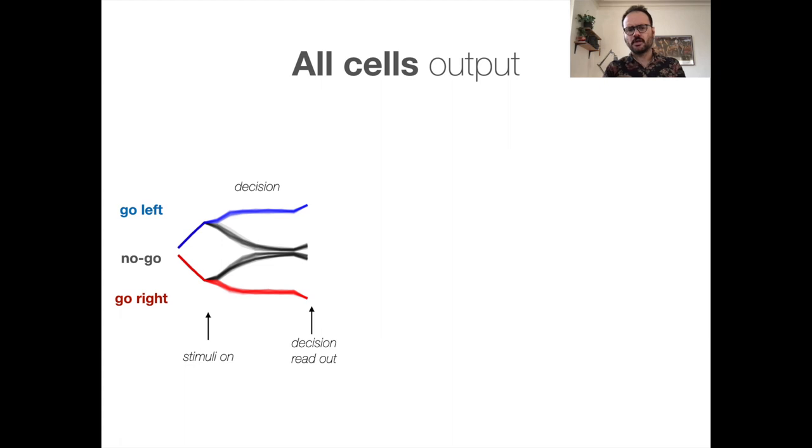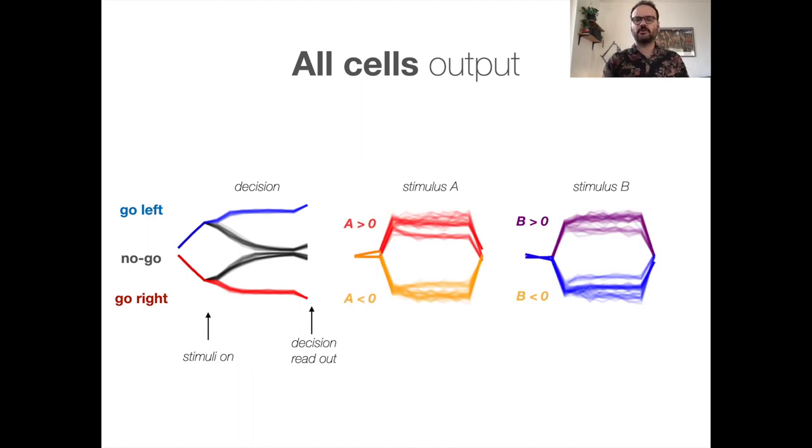We can also take a look at all the network activity projected on different axes. For example, if you project on the output axis, we see that the network groups different trials based on the decision which it trained upon at the end of the trial. However, there are other projections where you can decode the stimulus perfectly, regardless of the context, even the stimulus that should be ignored.